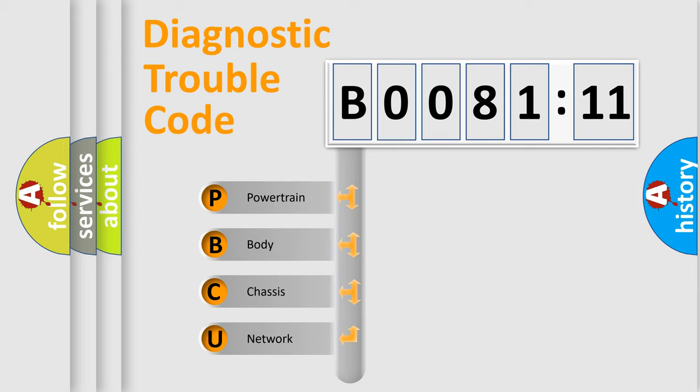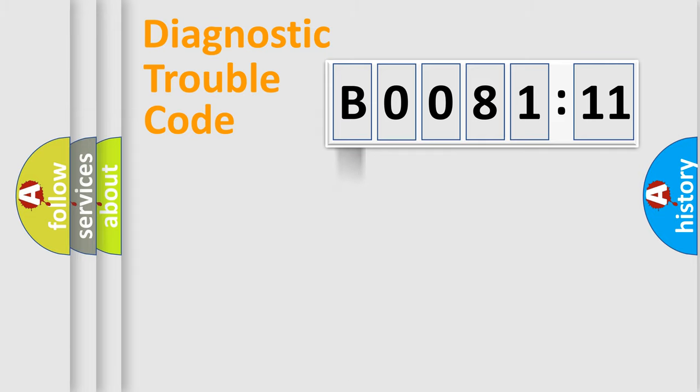We divide the electric system of automobile into four basic units: Powertrain, Body, Chassis, and Network. This distribution is defined in the first character code.